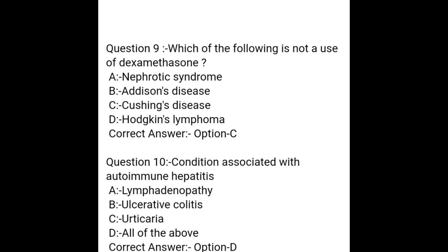Question 10. Conditions associated with autoimmune hepatitis: A. Lymphadenopathy, B. Ulcerative colitis, C. Erythrocyturia, D. All of the above. Correct answer: Option D — All of the above.